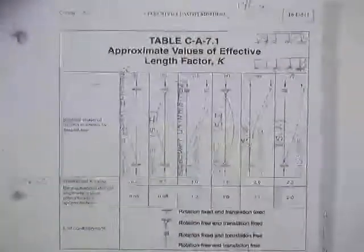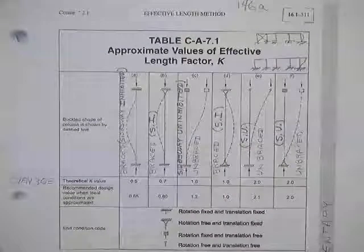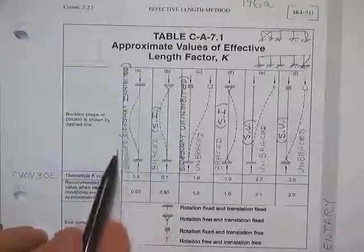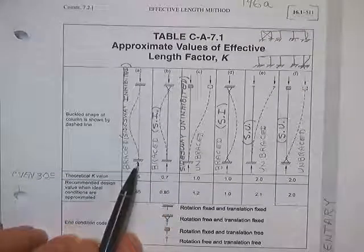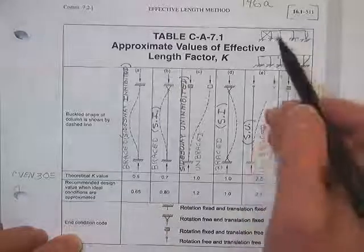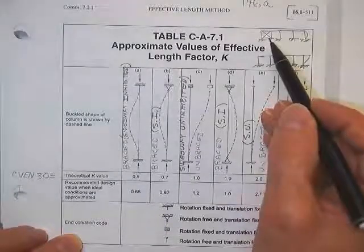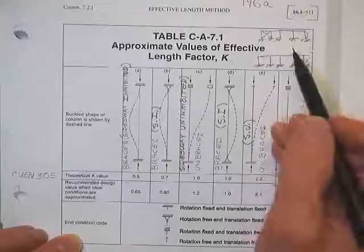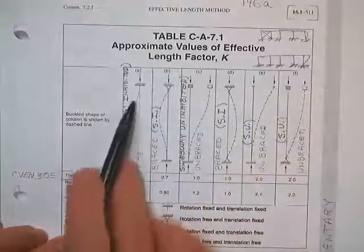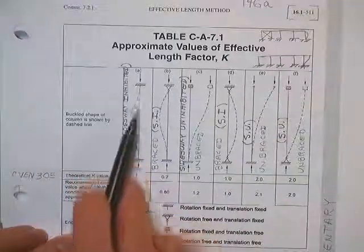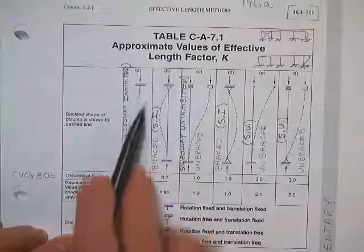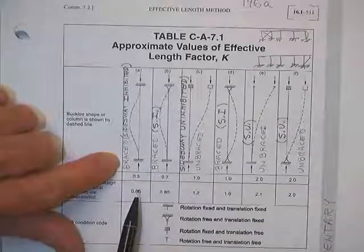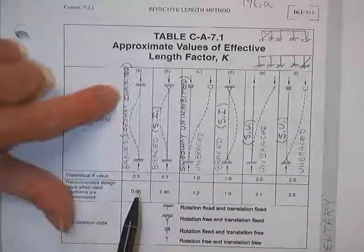A quick review of the table: here are your different cases. This is for a frame that is braced — it has bracing in it somewhere. These are braced because they're all braced by that one, and the tops cannot translate horizontally because the top stayed directly above the bottom. This is a braced frame — they call it sidesway inhibited.